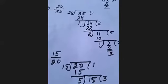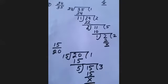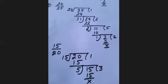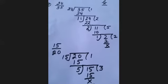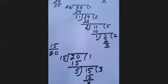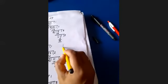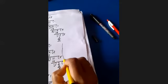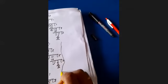Looking at the fraction 15 upon 20: this number is not in its simplest form, since 15 and 20 share a common factor.